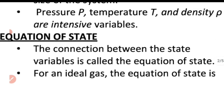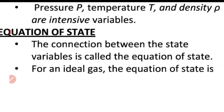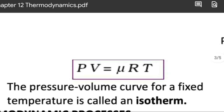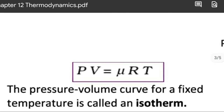To characterize the state of a thermodynamic system, we use certain equations called equations of state. An equation of state gives the connection between the thermodynamic state variables of a system. For an ideal gas, the equation of state is the ideal gas equation: PV = μRT, where P is the pressure, V is the volume, μ is the number of moles, R is the universal gas constant, and T is the temperature. If we draw the pressure-volume graph at a constant temperature, that graph is called an isotherm.